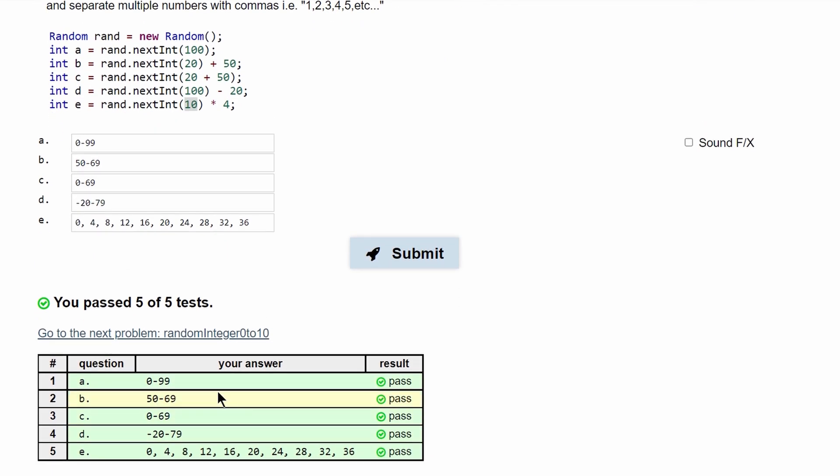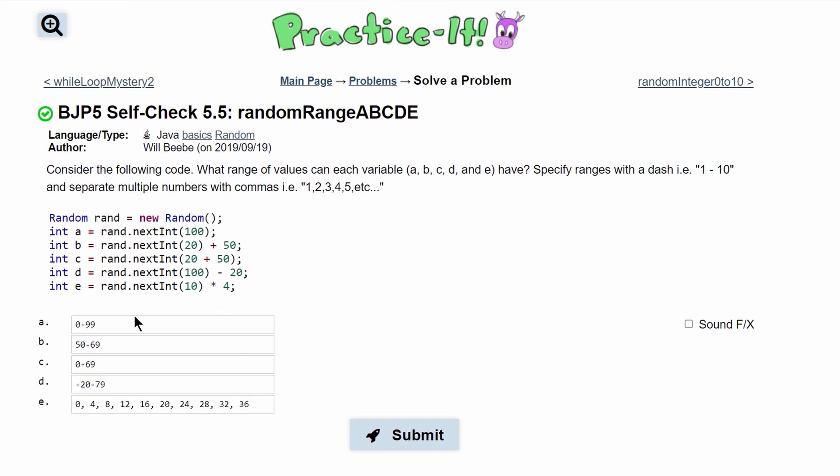If we submit this, we've passed all of the tests, and this is a simple way of how to go about using the random class.